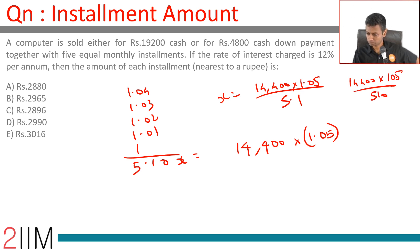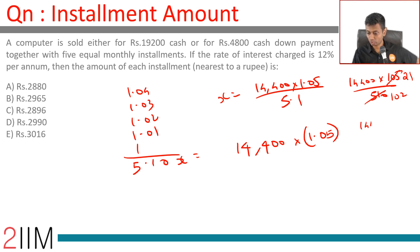That simplifies to 302,400 divided by 102. 14,400 divided by 100 is 144, and 144 times 21 gives us 3,024. So we are computing 302,400 divided by 102.